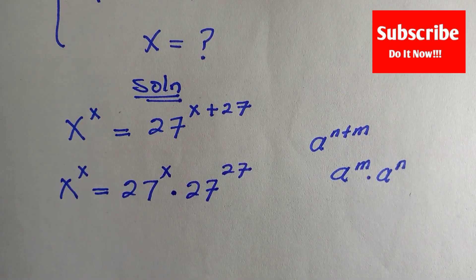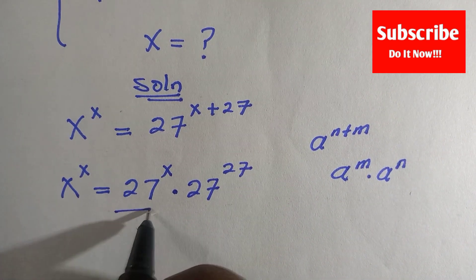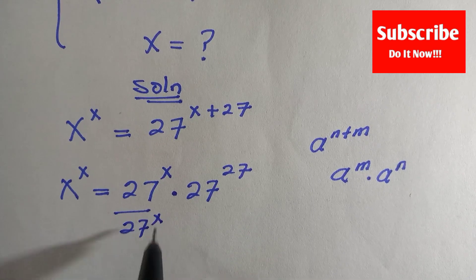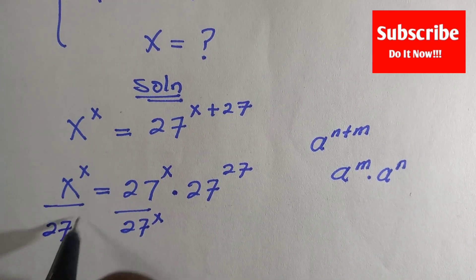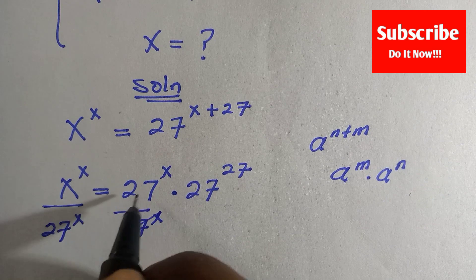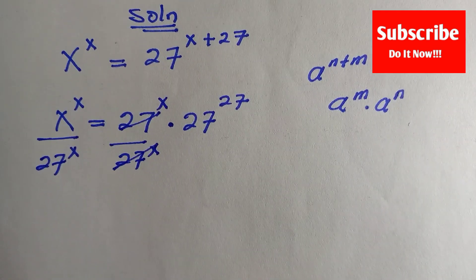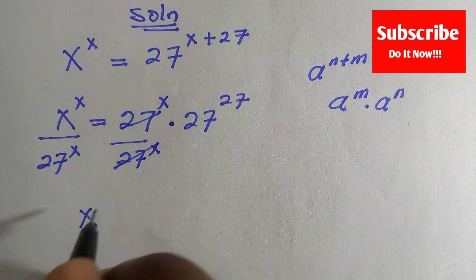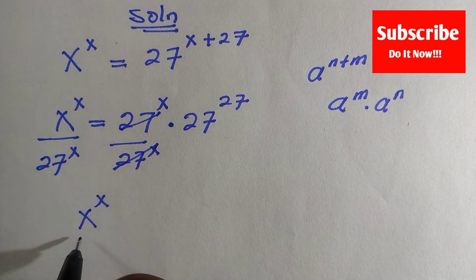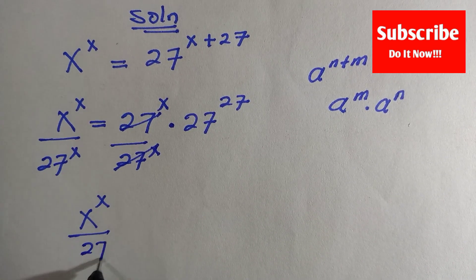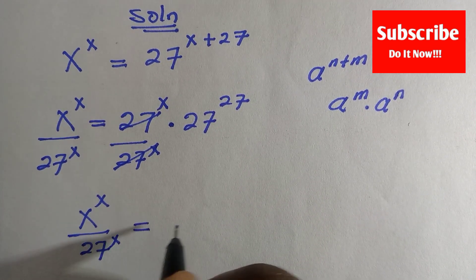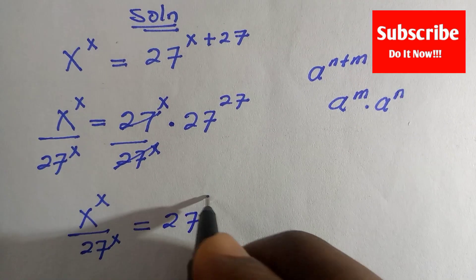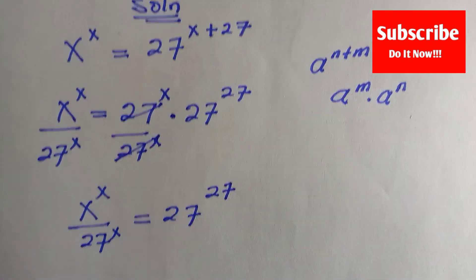Here we are going to divide by 27^x, divide by 27^x. If these two go, then we have x^x divided by 27^x equals 27^27.